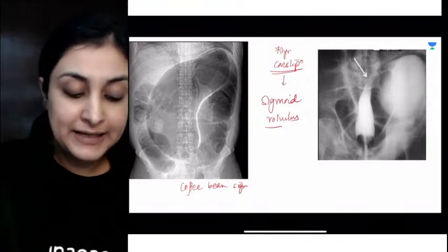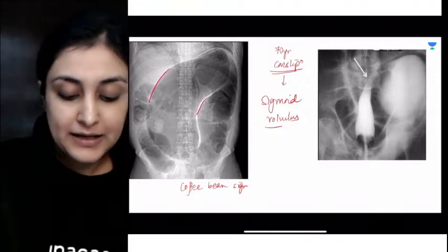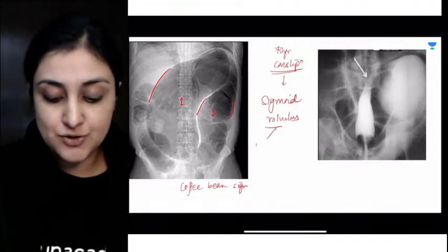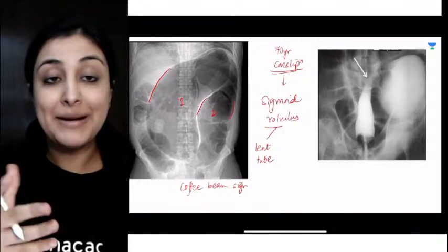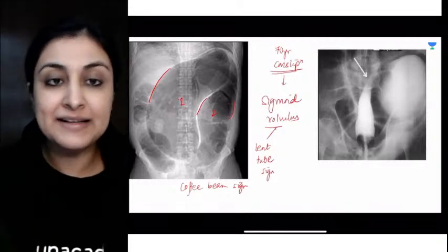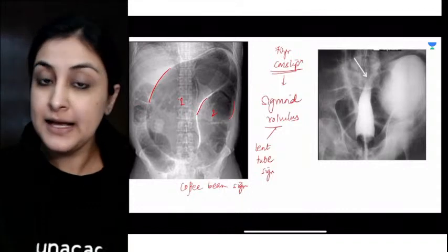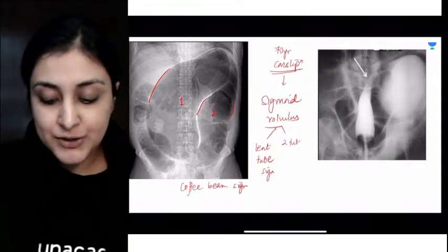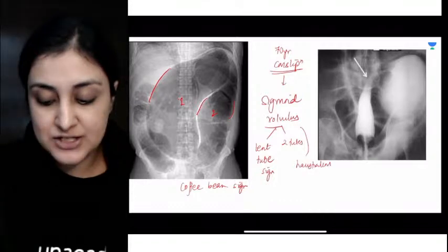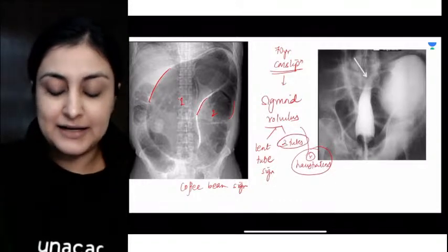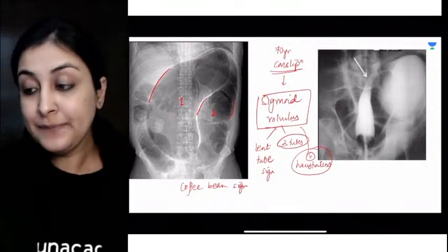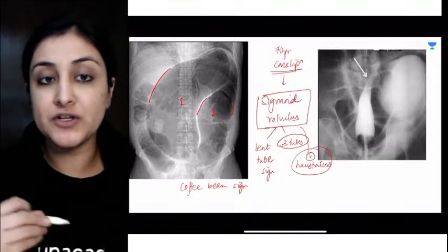Always ensure that it's sigmoid volvulus by checking two points. What two points? How many loops are we seeing? One tube here, another tube here. So this is the two tubes that we will see. Someone said it looks like a bent tube, bent tube sign. Second thing, do we see haustra? No. So there will be two tubes that you see and there will be no haustra here. So you just check these two points and then mark that the answer is definitely sigmoid volvulus.